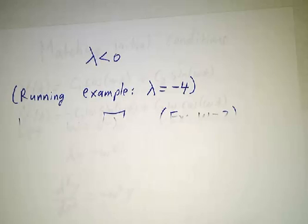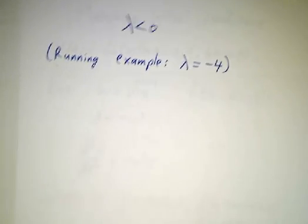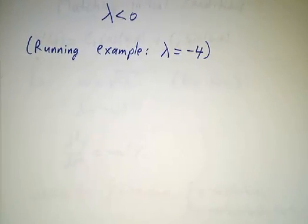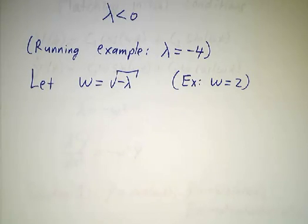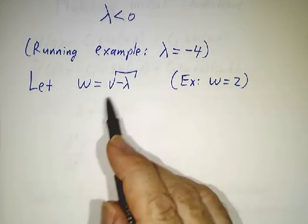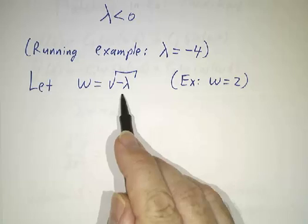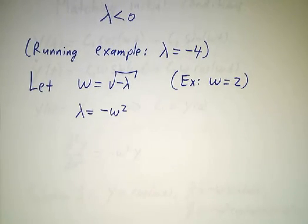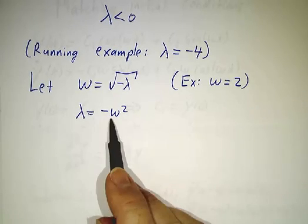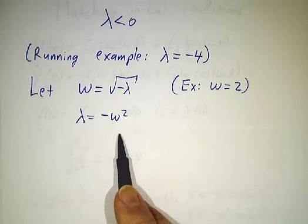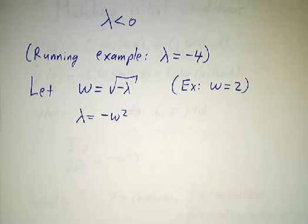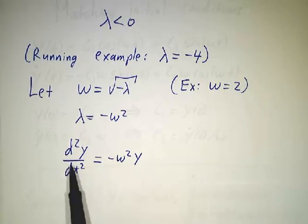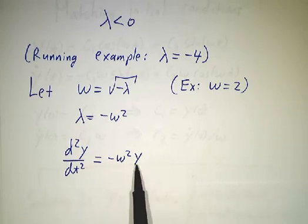Okay, so let's suppose that lambda is negative. So in particular, think about lambda equals negative four. Then we define a frequency omega, which is the square root of negative lambda. So if lambda is negative four, omega is two. In other words, we're writing lambda as minus omega squared, which we can do because lambda is negative. And that tells us that our second derivative is minus omega squared y.